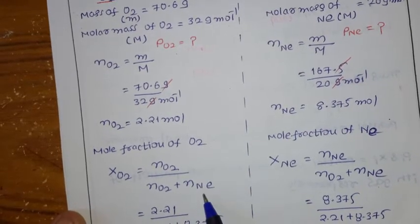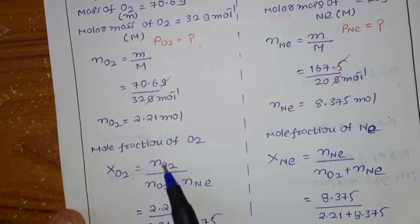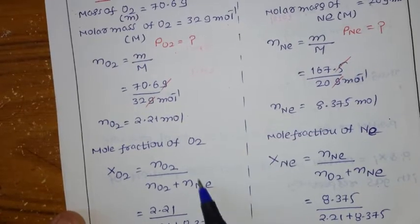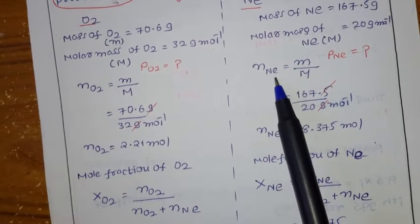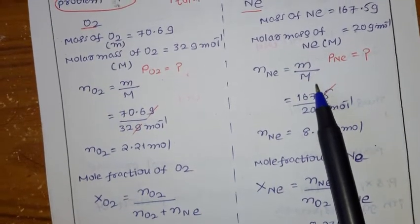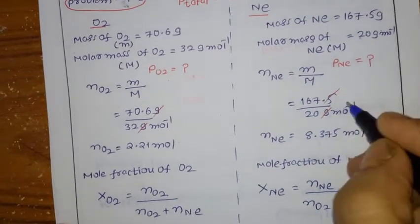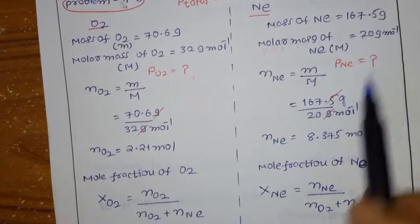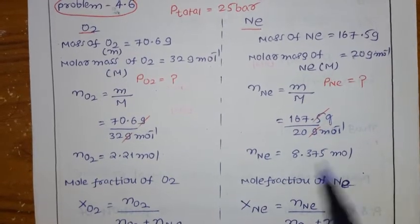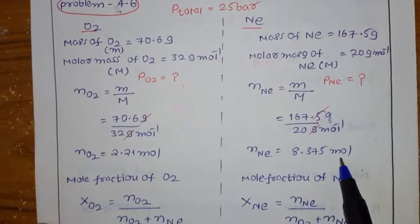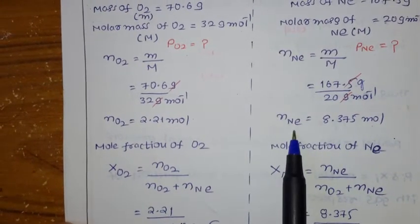Number of moles of Neon = mass / molar mass = 167.5 / 20 = 8.375 moles. Molar mass of Neon = 20 grams/mol. Now we have number of moles of Oxygen = 2.21 and number of moles of Neon = 8.375, so we can calculate the mole fraction of each gas.